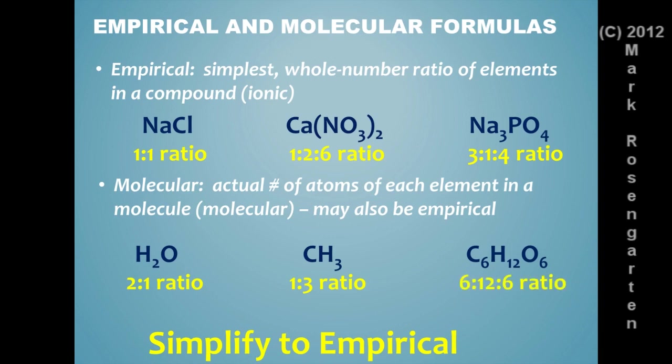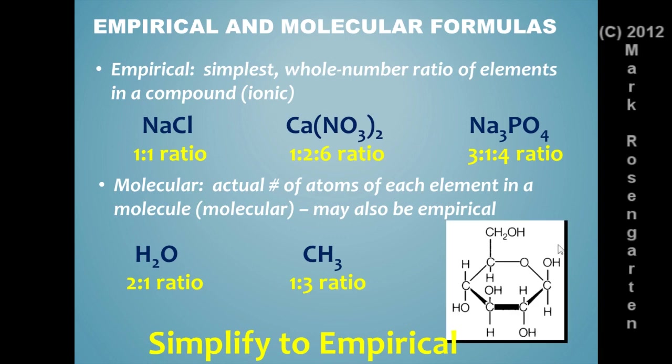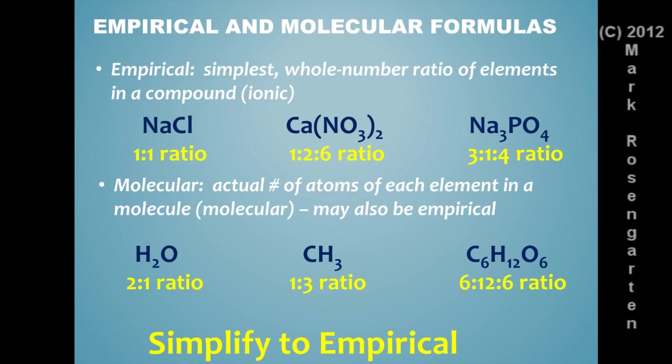C6H12O6. You've seen this before. A 6 to 12 to 6 ratio. And the reason why that is the way it is is because that's the actual number of atoms of each element in this compound. It's not the simplest whole number ratio, though. A 6 to 12 to 6 ratio simplifies to a 1 to 2 to 1 ratio. And there may be other compounds that have this same proportion of carbon to hydrogen to oxygen. We generally call those carbohydrates.